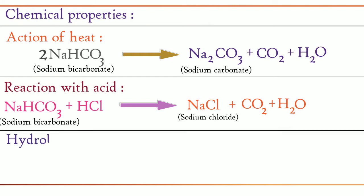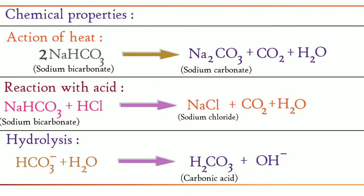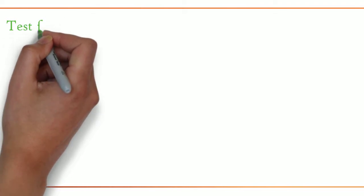Going on to hydrolysis. The equation is: HCO3⁻ + H2O gives H2CO3 + OH⁻. On hydrolysis, it gives carbonic acid and hydroxyl ion. It is slightly alkaline, so it turns phenolphthalein faintly pink. This distinguishes carbonate from sodium bicarbonate.